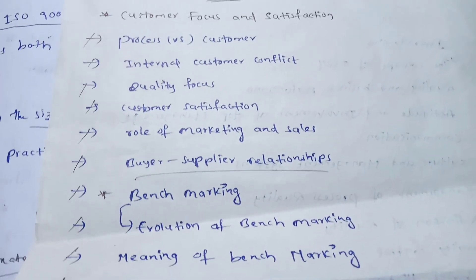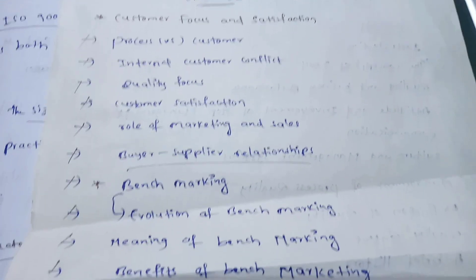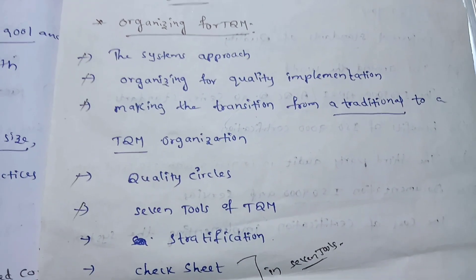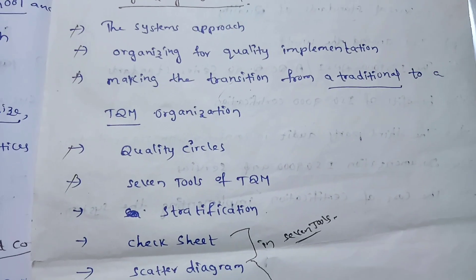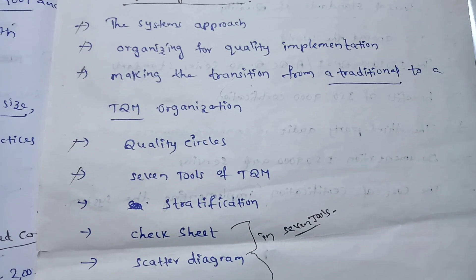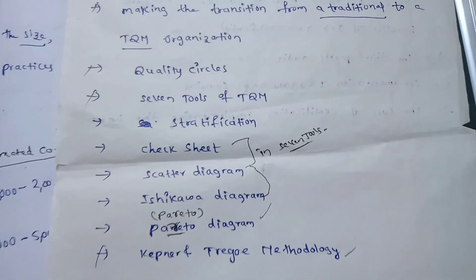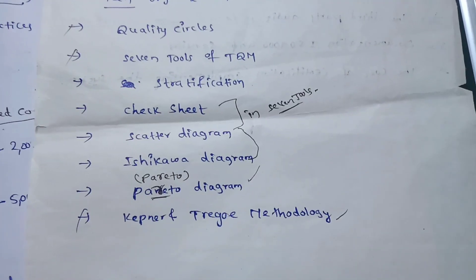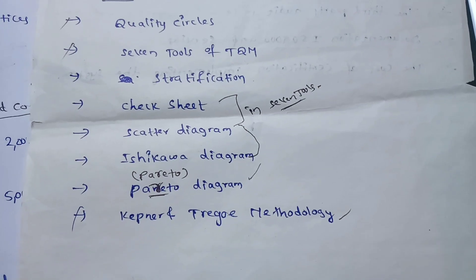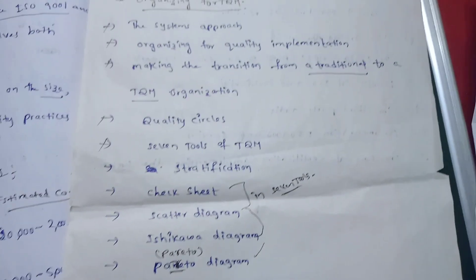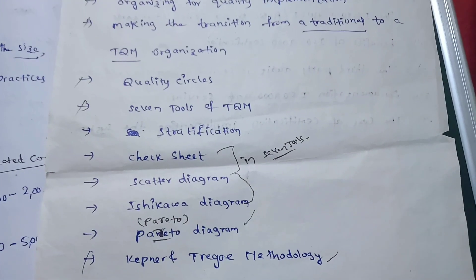The topics in unit three are: organizing for TQM, the systems approach, organizing for quality implementation, making the transition from a traditional to a Total Quality Management organization, quality circles, seven tools of Total Quality Management, certification, check sheet, scatter diagram, Ishikawa diagram, pilot diagram, and Kepner-Tregoe methodology.